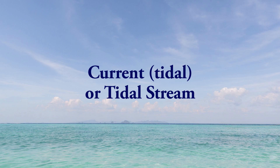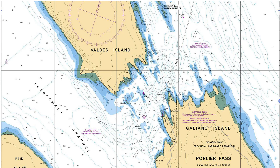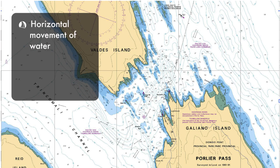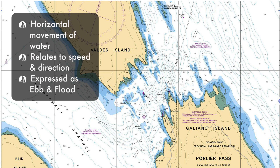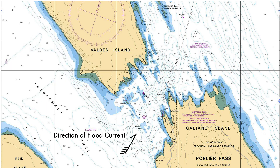Current. What I mean here is a current driven by the tide rising or falling, not ocean currents like the Gulf Stream. Tidal currents are the horizontal movement of water, and relate to speed and direction. They are expressed as ebb or flood. We care about currents when going through narrow tidal passes, and in areas with tide rips.